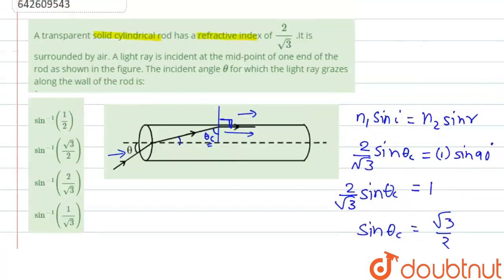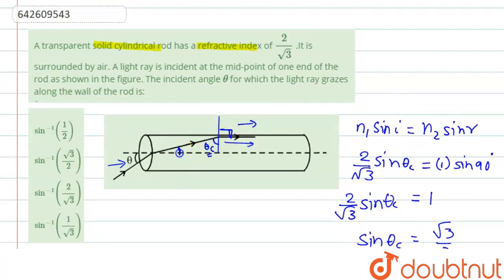Now we have theta c, so we can find out this angle. So if it is 60 degree and this is 90 degree, this is 90 degree, then this must be 30 degree.